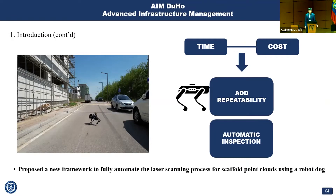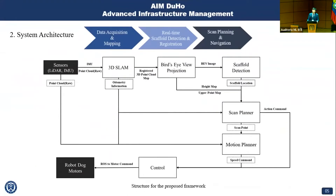Using mobile robots to automate the scanning process would add repeatability to the inspection process and could reduce time and cost, leading to more frequent and thorough inspections. I proposed a new framework to fully automate the laser scanning process for scaffold point clouds using a robot dog. My framework can be divided into three parts: first, data acquisition and mapping; second, real-time scaffold detection and registration; and third, scan planning and navigation. I used ROS, the robot operating system, to integrate all the nodes I created.